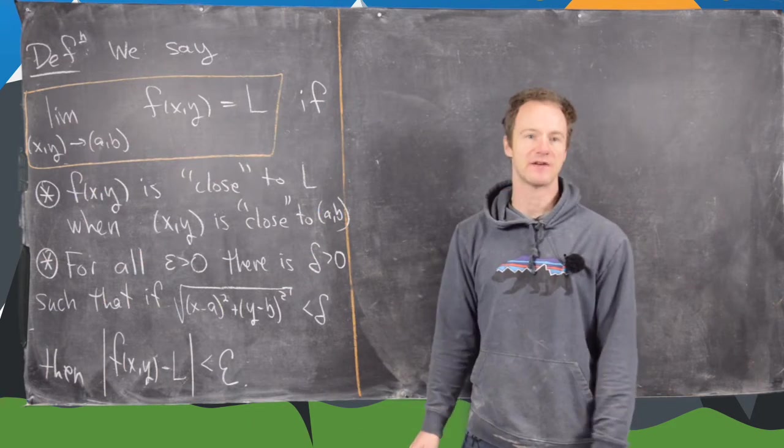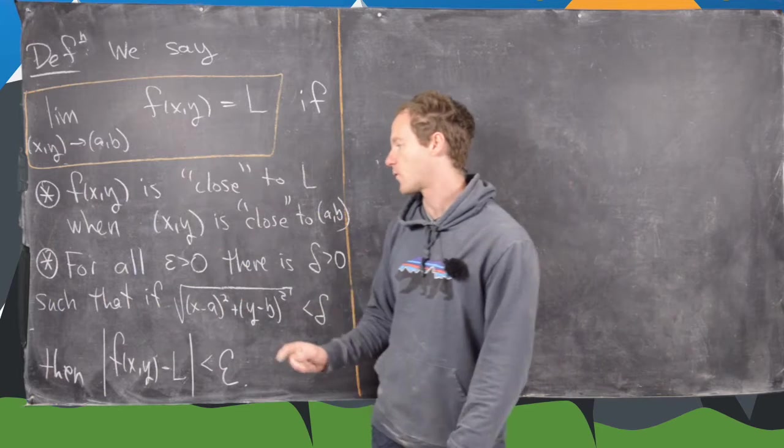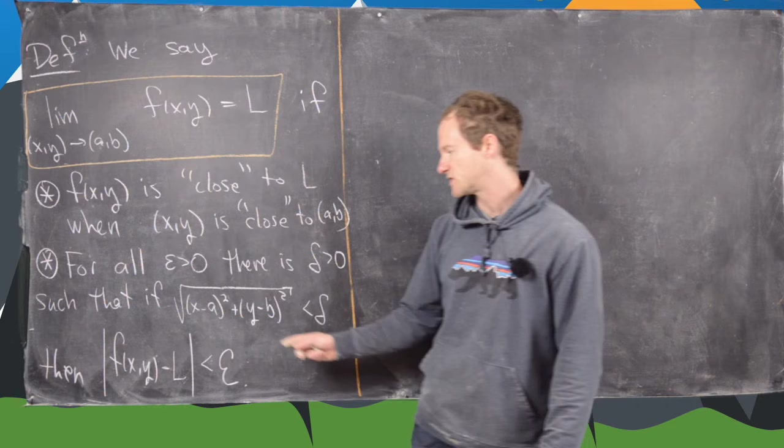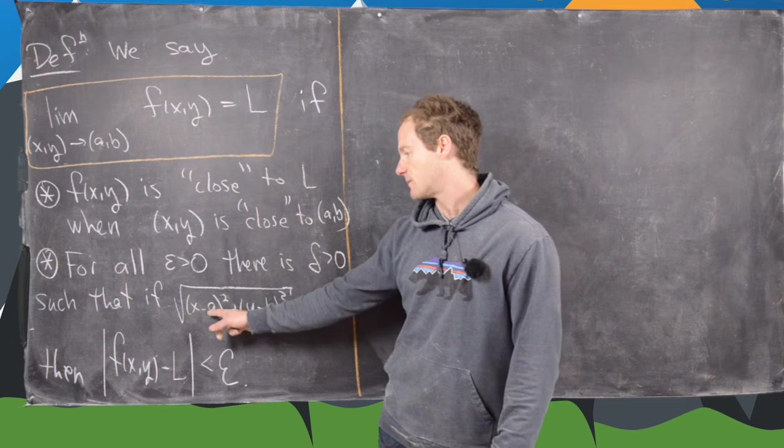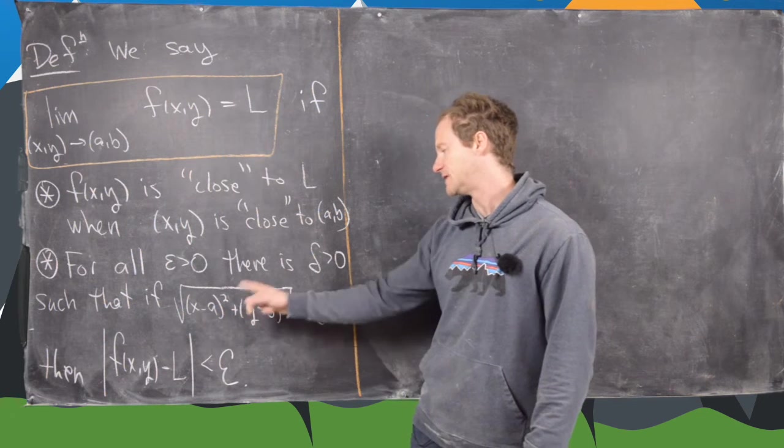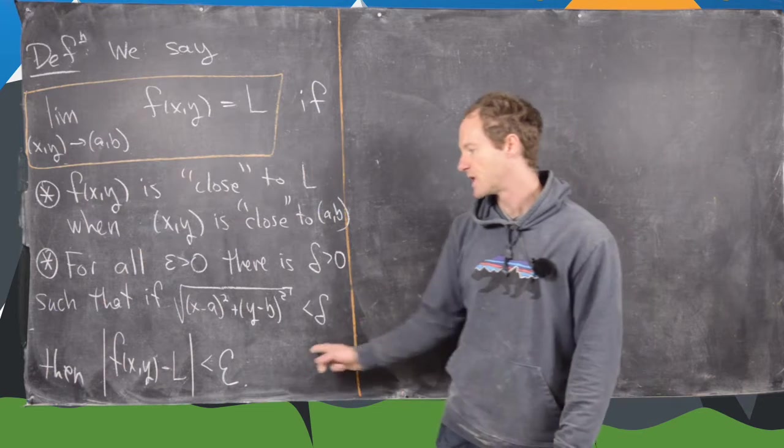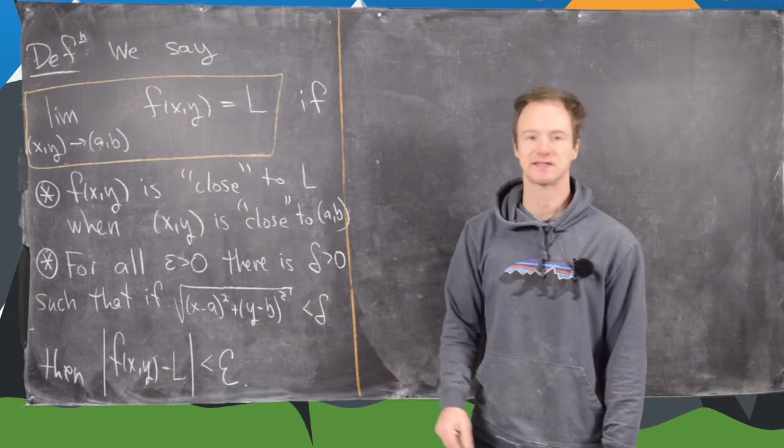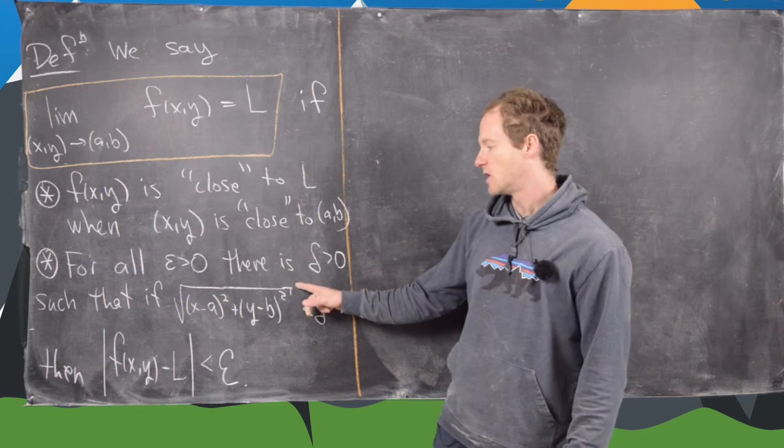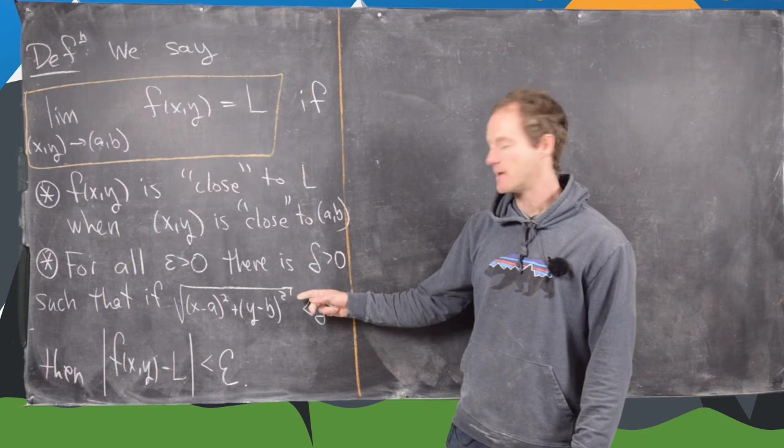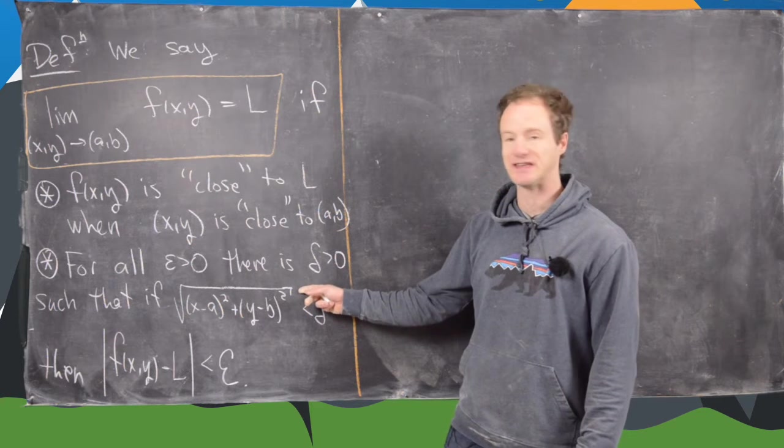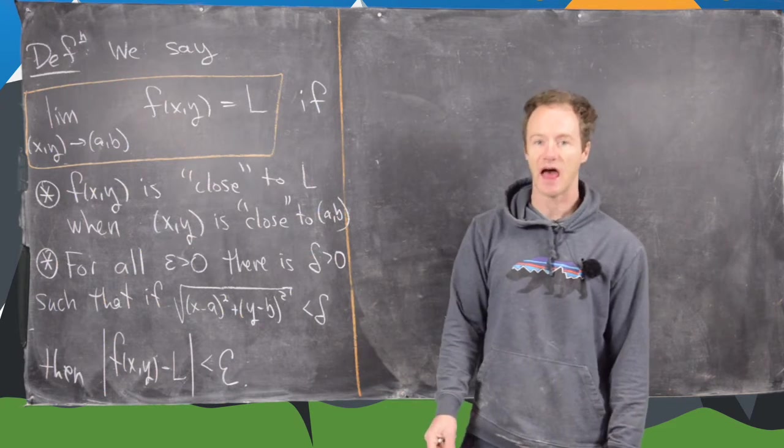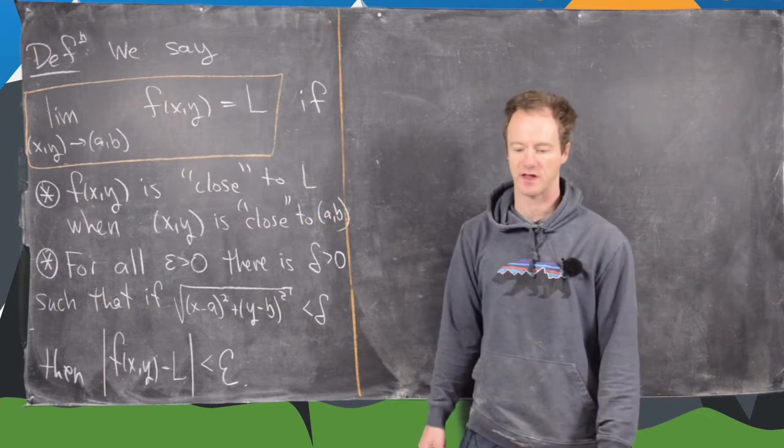But the proper definition is really as follows. For all epsilon bigger than zero, there is a delta bigger than zero, such that if X minus A squared plus Y minus B squared all under the square root is less than delta, then f of XY minus L in the absolute value is less than epsilon. Notice this means that XY is close to AB by the distance formula in two dimensions, and this says that f of XY is close to L, which is the distance formula in one dimension.